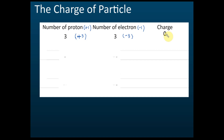We determine the charge by counting how many protons and electrons are inside the particle. For example, this atom has five protons and two electrons, so the charge is positive three. That's correct — it's positive three.